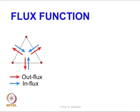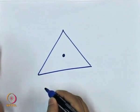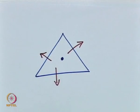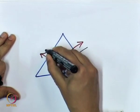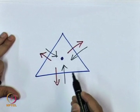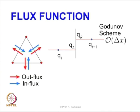Flux is both ingoing and outgoing. When you consider a particular control volume — for example, a triangle — the values are at the center, and this control volume will have fluxes going in and out. The net flux will be the algebraic sum of those ingoing and outgoing fluxes. One way to compute this is to use a scheme that is a first order approximation, called the Godunov scheme.